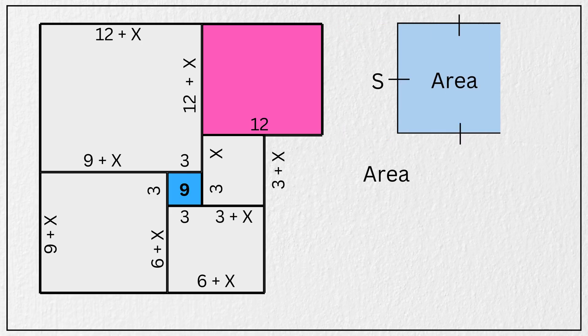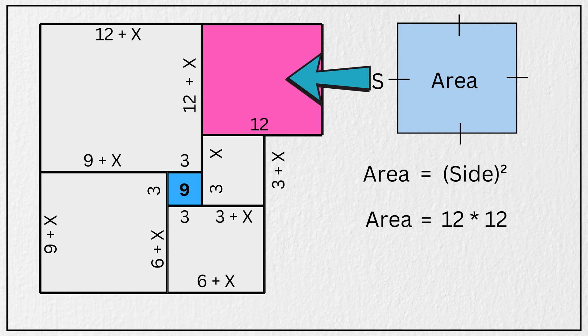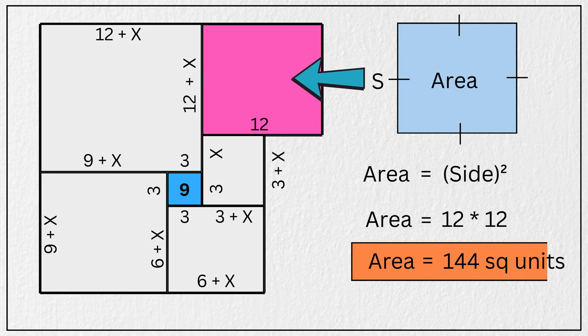We know that area of a square is calculated by squaring its side. So substituting side equal to 12 units in area formula we have, area of this pink shaded square is equal to 12 multiplied by 12, which equals 144 square units. And that is our final answer.